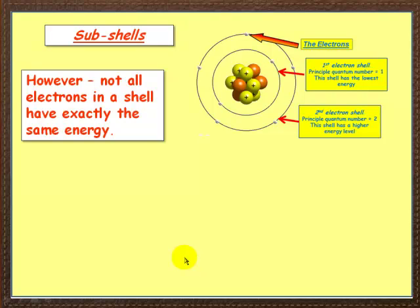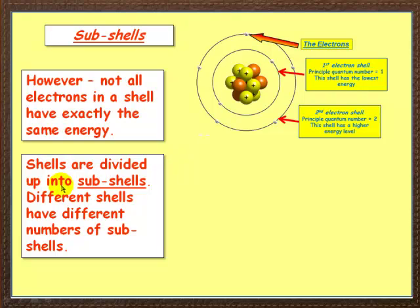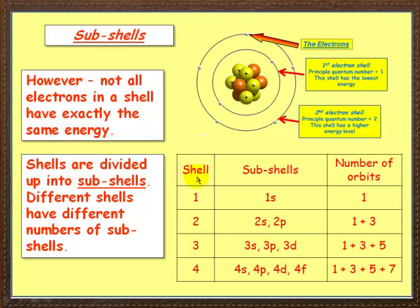Now this is where it starts to get a little bit more complex. Not all electrons in the shell have exactly the same energy. They may not all have exactly the same energy. We've got shells divided into sub-shells. Let's not get too confused here, but we are dividing shells into sub-shells. And the different shells have different numbers of sub-shells.